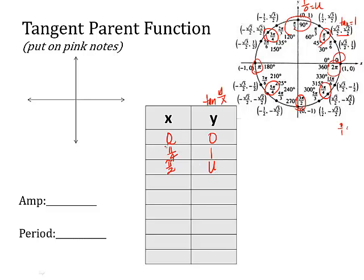Now this is going to seem a little strange, but we're going to go in the negative direction. We're going to focus just on the right side of our unit circle, because it's going to repeat. If we go down to 7π/4 — remember, that's the same as negative π/4 — the tangent would be negative √2/2 over positive √2/2, giving a tangent of negative 1. And if I go to negative π/2, the tangent would be negative 1 over 0, which is undefined.